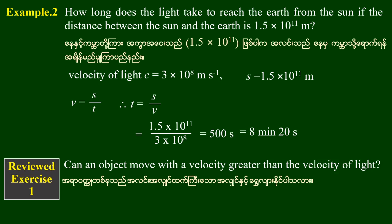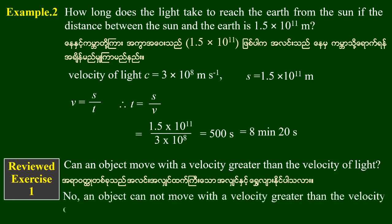Let's begin with the second question. The question is to identify two and three. If you have any questions, please give us a thumbs up — no object can move with a velocity greater than the velocity of light.